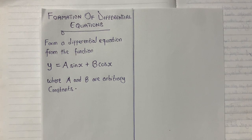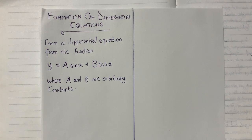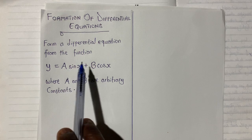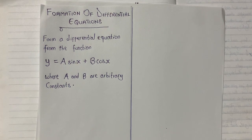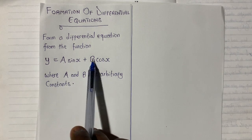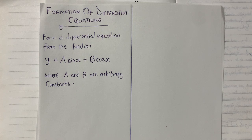How do we form a new differential equation when we have been given another equation to use? We have the equation y equals a·sin(x) plus b·cos(x), where a and b are called the arbitrary constants. The first thing you should know is that the number of constants in the given equation will determine the number of times that you differentiate. So since we have two arbitrary constants a and b, we will differentiate the equation twice.